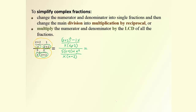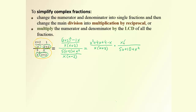After that we have single fractions. Open the bracket: squaring a binomial gives x² + 4x + 4, then minus x. Keep the denominator in factored form. Now the main division bar can be written as multiplication by the reciprocal — we write the bottom numerator (5x + 10 + x²) in the denominator of the new expression, and the top stays in the numerator. Since everything is already in factored form, we look for common factors to reduce.